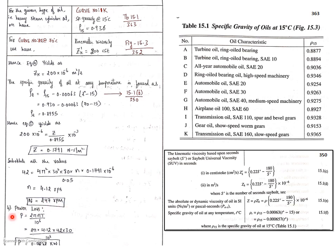Once you get the journal speed, next calculate the power loss. The power loss formula is P equals 2 pi N T divided by 60. Since we are using small n in RPS, neglect the 60 and divide by 10 raised to 3 to convert directly to kilowatts. Substitute the values to find the value of P. This is the formula from the Data Handbook.